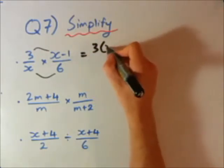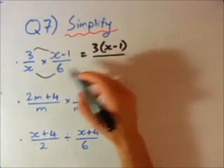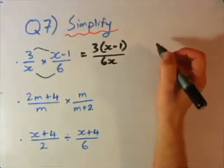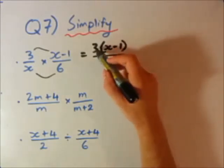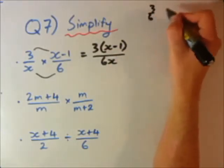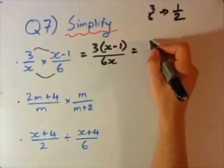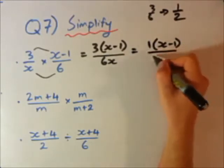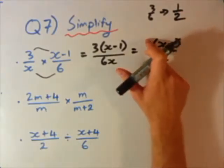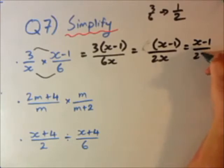I'm going to write 3 times (x minus 1) — I'll leave x minus 1 in a bracket — times the top, divided by x times 6, which is 6x. Now we simplify. Looking at the numbers: 3 divided by 6 goes to 1 over 2 — we're dividing top and bottom by 3. So we get (x minus 1) over 2x. That's our final answer. I probably wouldn't write the 1, so just x minus 1 over 2x.